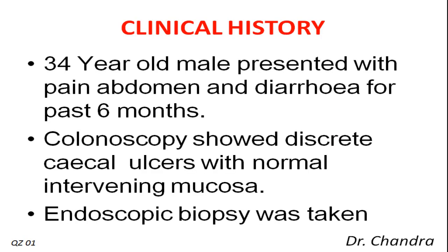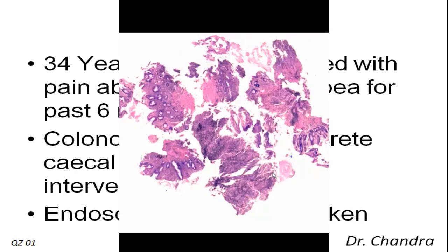Clinical history of the case goes like this. A 34-year-old male presented with pain abdomen and diarrhea for the past 6 months. Colonoscopy showed discrete cecal ulcers with normal intervening mucosa. Endoscopic biopsy was taken.